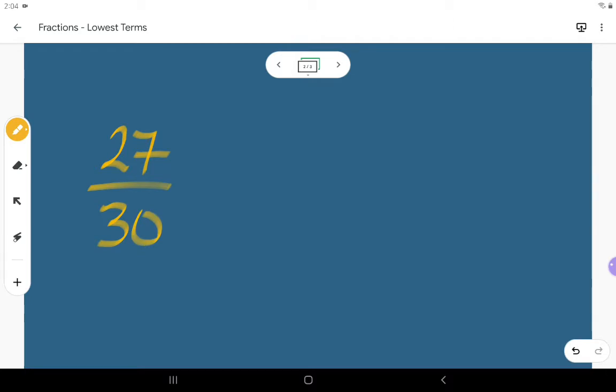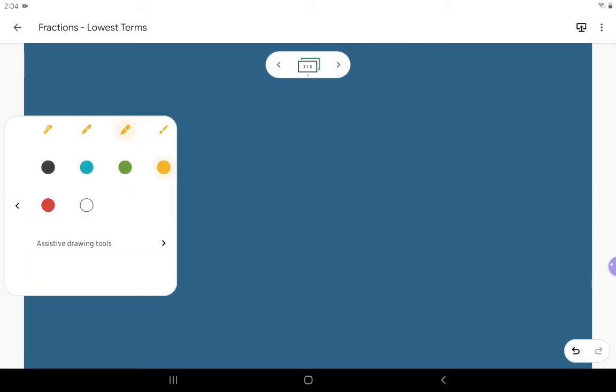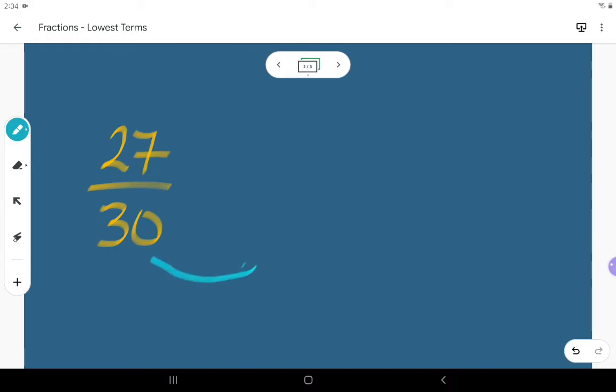27 and 30 both have a common factor of 3. I'm going to divide the numerator and the denominator both by 3. So I'm going to divide by 3 on the bottom and divide by 3 up top. 27 divided by 3 turns into 9, and 30 divided by 3 becomes 10.